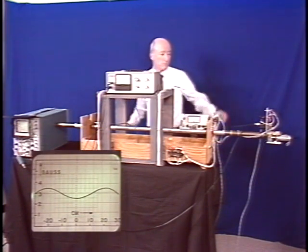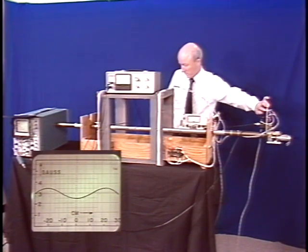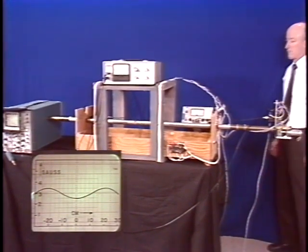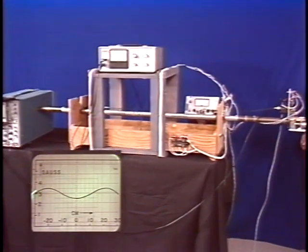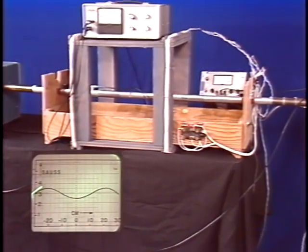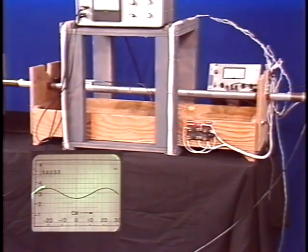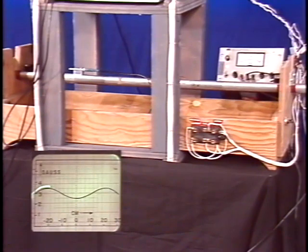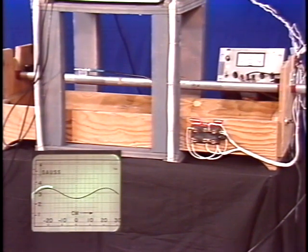We now turn on the probe carriage. The scope horizontal gain has been adjusted so that the horizontal deflection of the scope matches the z position of the probe. The magnetic field is largest directly under a coil, now the left one at z equal minus d.